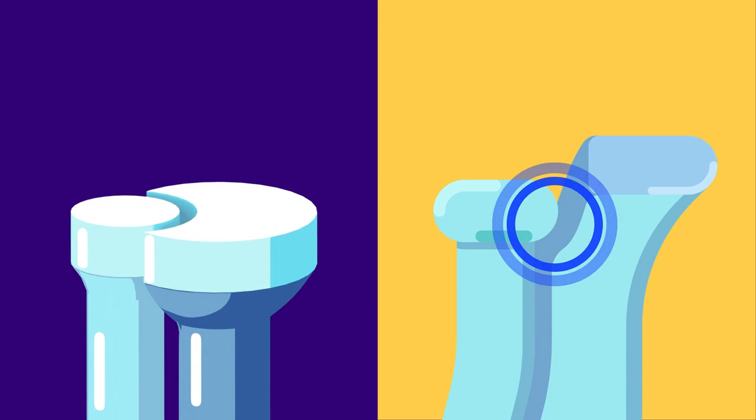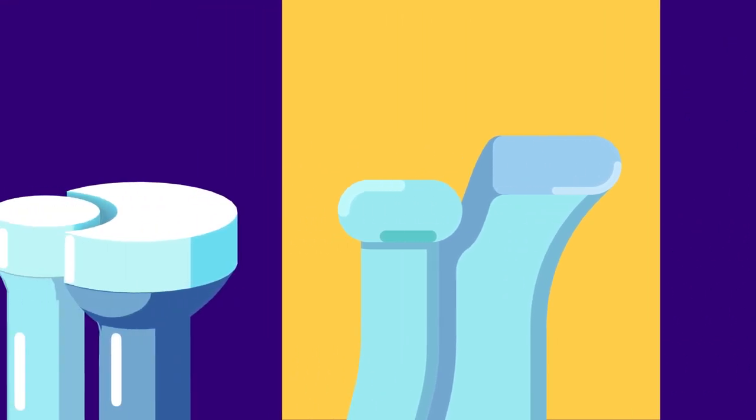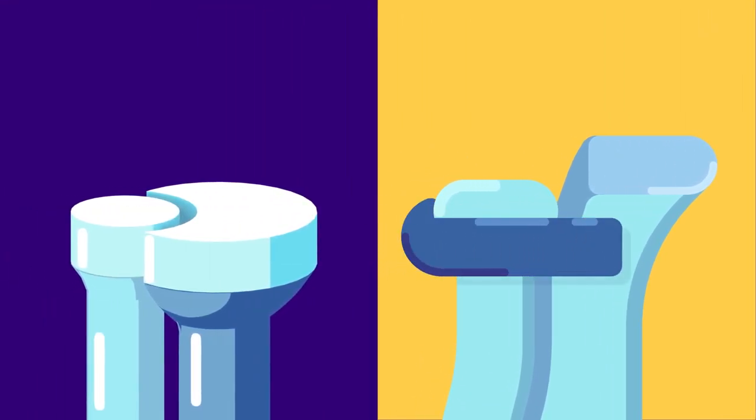These joints consist of a round end of a bone inside a concave ring formed in the second bone, and permit rotation of one bone around another. This ring is lined with a ligament to make the movement smooth.